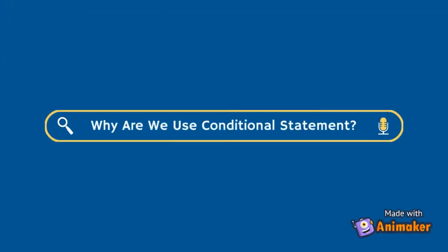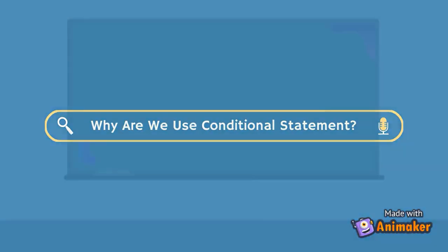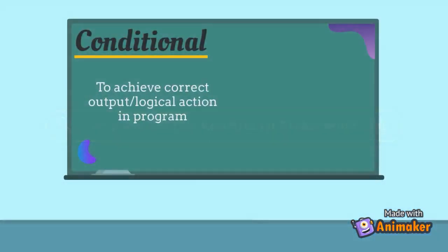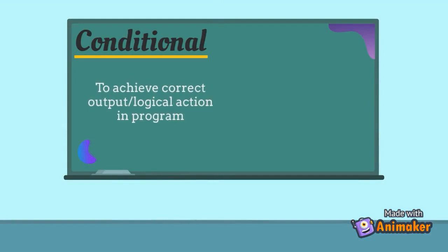Why do we use conditional statements? It is to achieve the right output or logical action in a program. Programming often involves examining a set of conditions and deciding several actions to take, based on that condition.